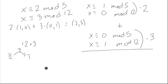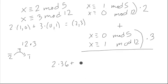So we can write out 2 times 36 plus something else — it's going to be 3 times the solution to the second equation. So let's work on that one.